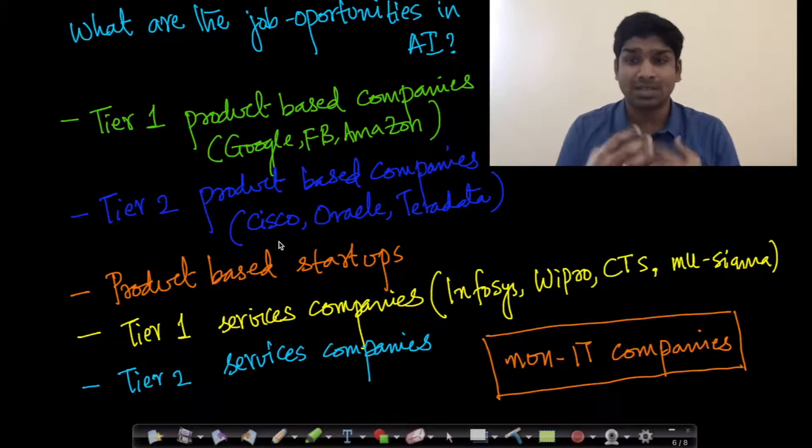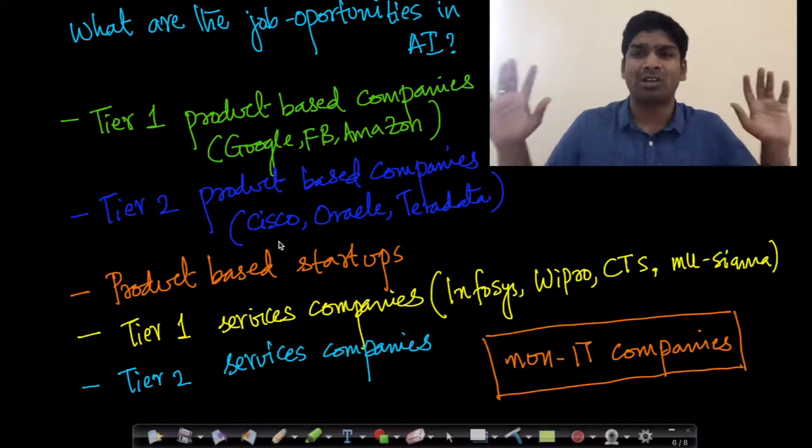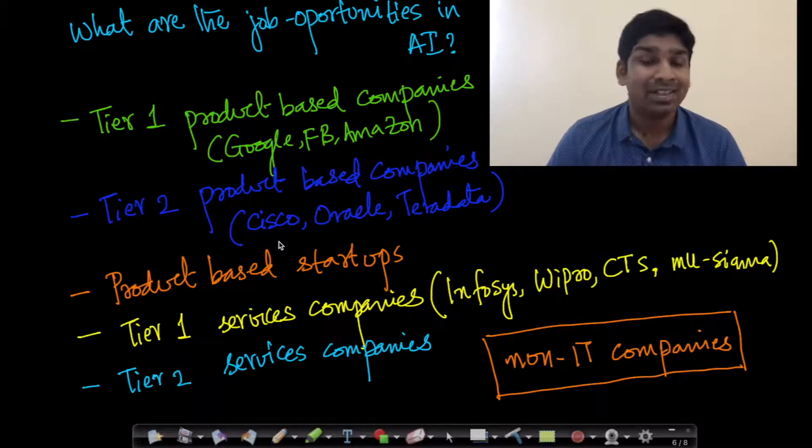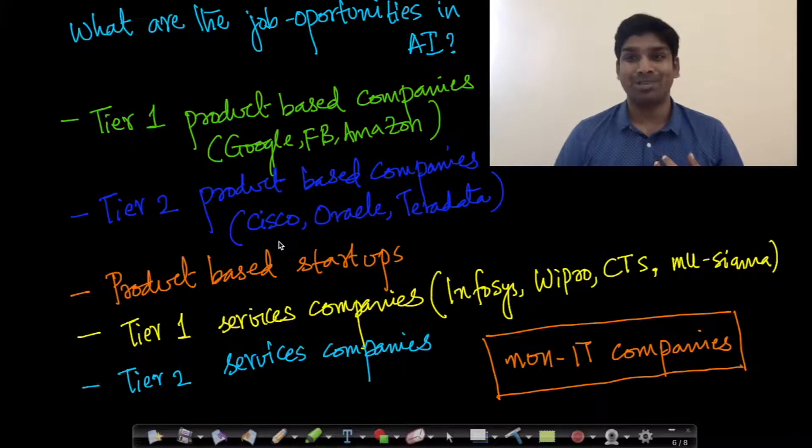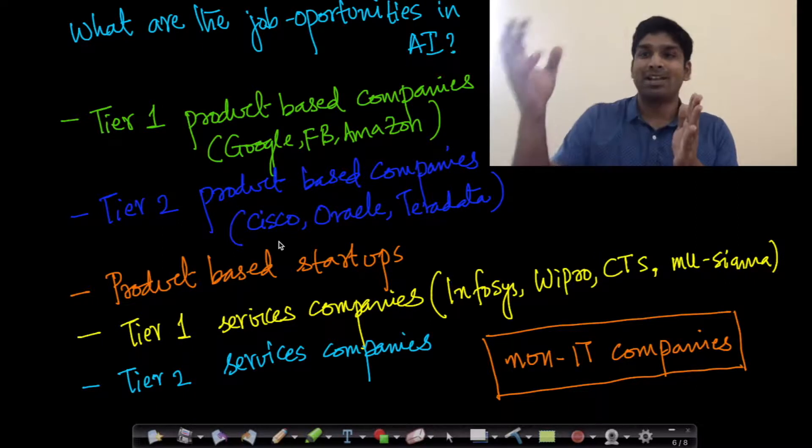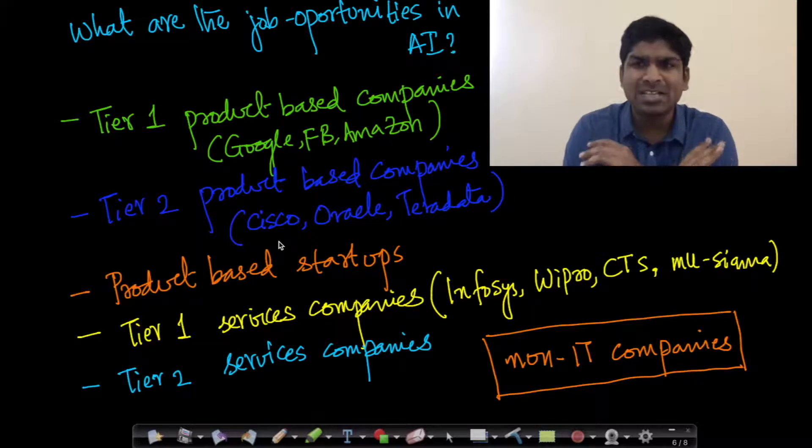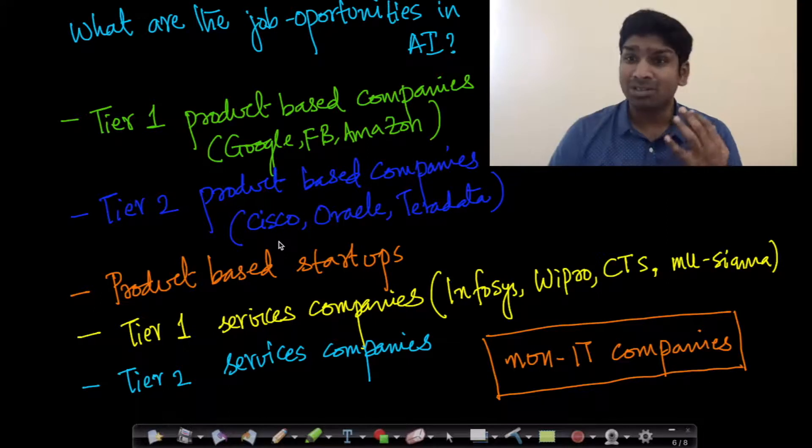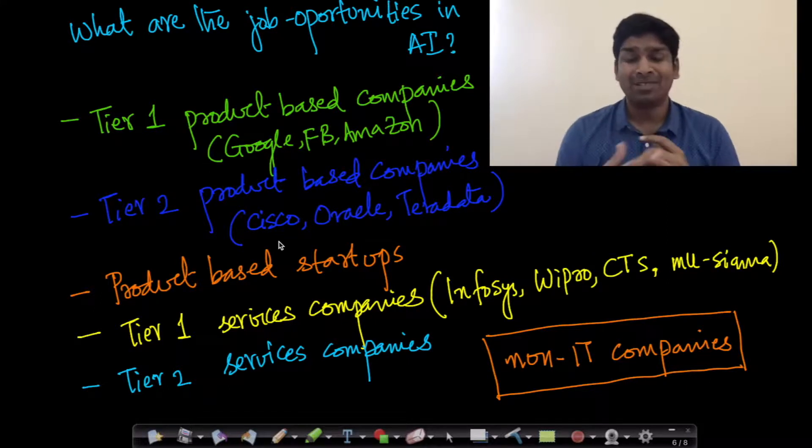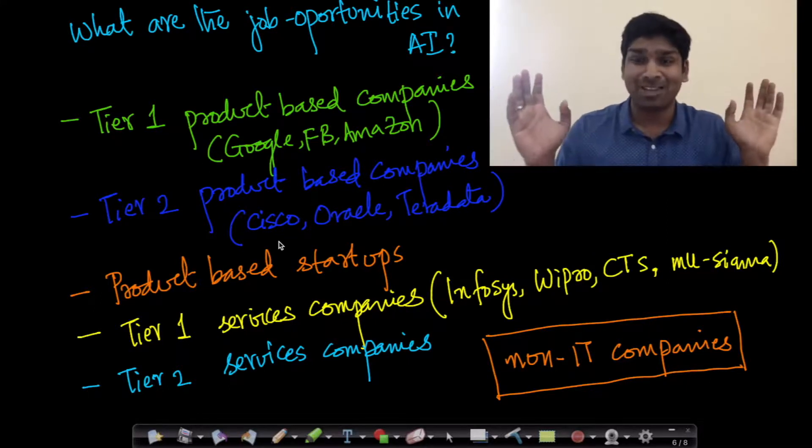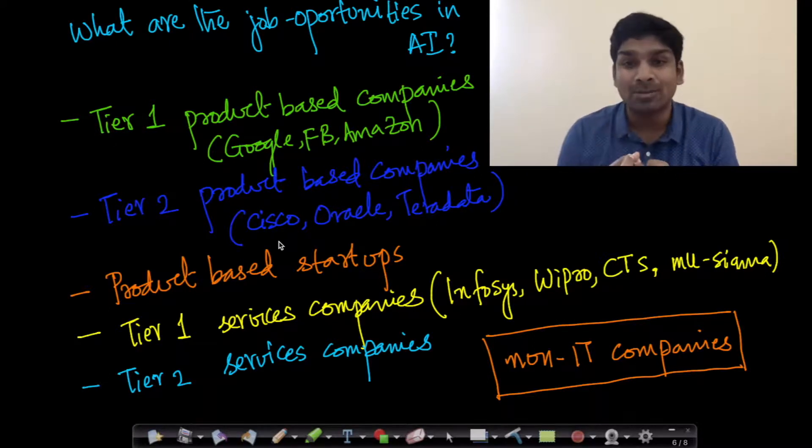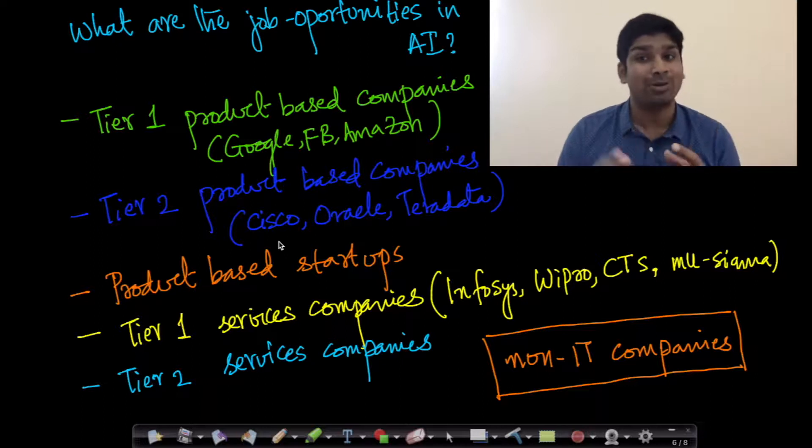If you're in India there are a lot of tier one services companies like Infosys, Wipro, Cognizant, Mu Sigma etc. There is a massive amount of requirement of data science specialists and AI engineers in these companies because these companies provide services to their clients and their clients come from wide spectrum of areas—everything from banking, finance, insurance, stock trading, healthcare, you name it. They have clients everywhere and all these clients are trying to use services provided by these tier one services companies to solve their AI or data science problems.